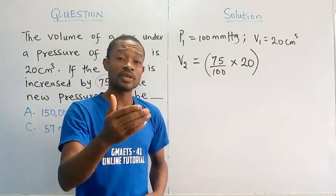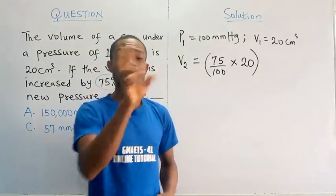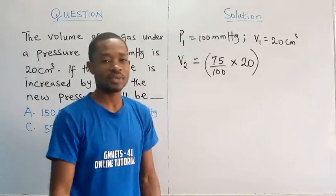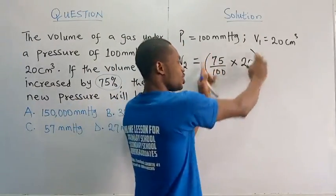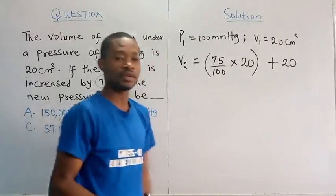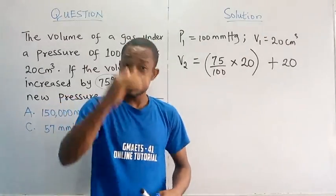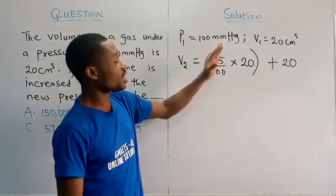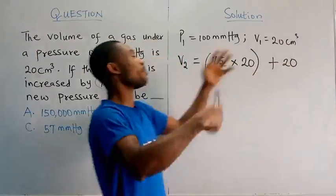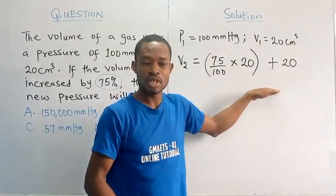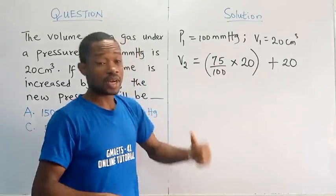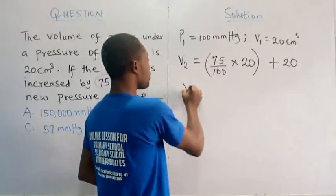Remember the rule: percentage increase. Take the percentage of that value. Anything you get as an answer, add it to that value. So from here, 75% of 20, anything we get here, since we are increasing, we will add it to the initial volume, 20. If we are reducing, percentage reduction, once we take the percentage, anything we get, we will subtract it from the original, which would mean 20 minus this percentage of 20, if it is reduction. But in our question here, we are increasing.